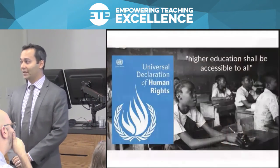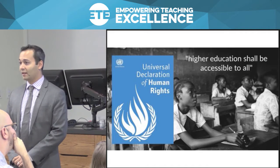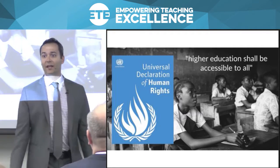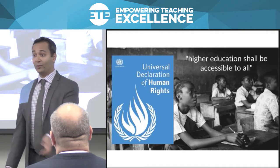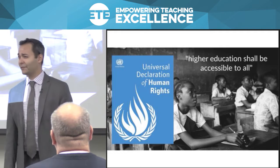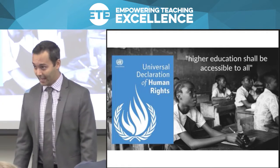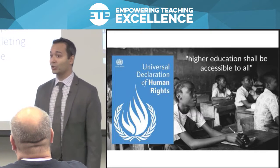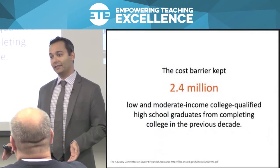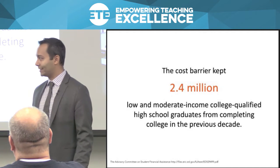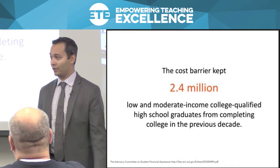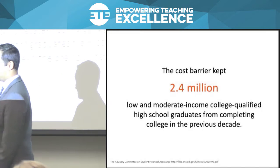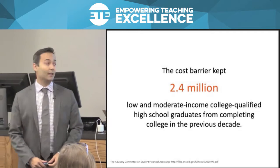Few people realize there's language embedded within the United Nations Universal Declaration of Human Rights concerning the importance of equal access to higher education — that's Article 26. Even when we think about this, our minds immediately go to the third world, but I'm talking about here. North America. Canada. United States. Utah State University. In this country, according to a study commissioned by the Department of Education, in just the first decade of this century, 2.4 million students could not attend or complete college because of the cost barrier. These are students who were qualified in every way — they took the right classes, had the right grades. Cost was their only barrier.